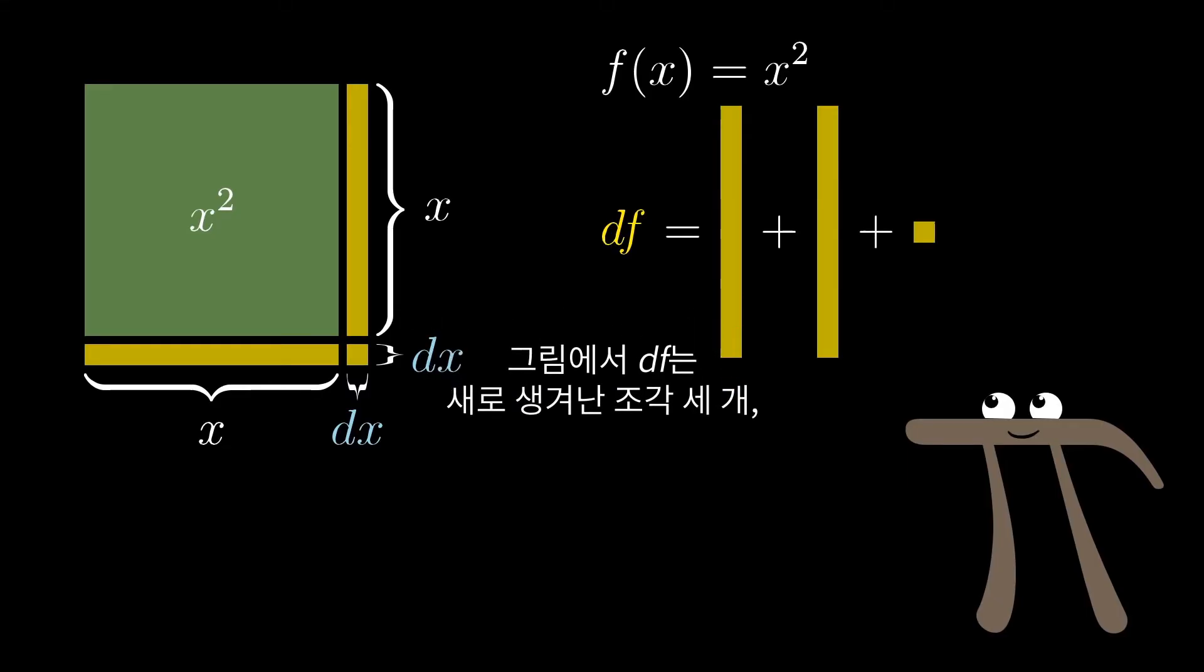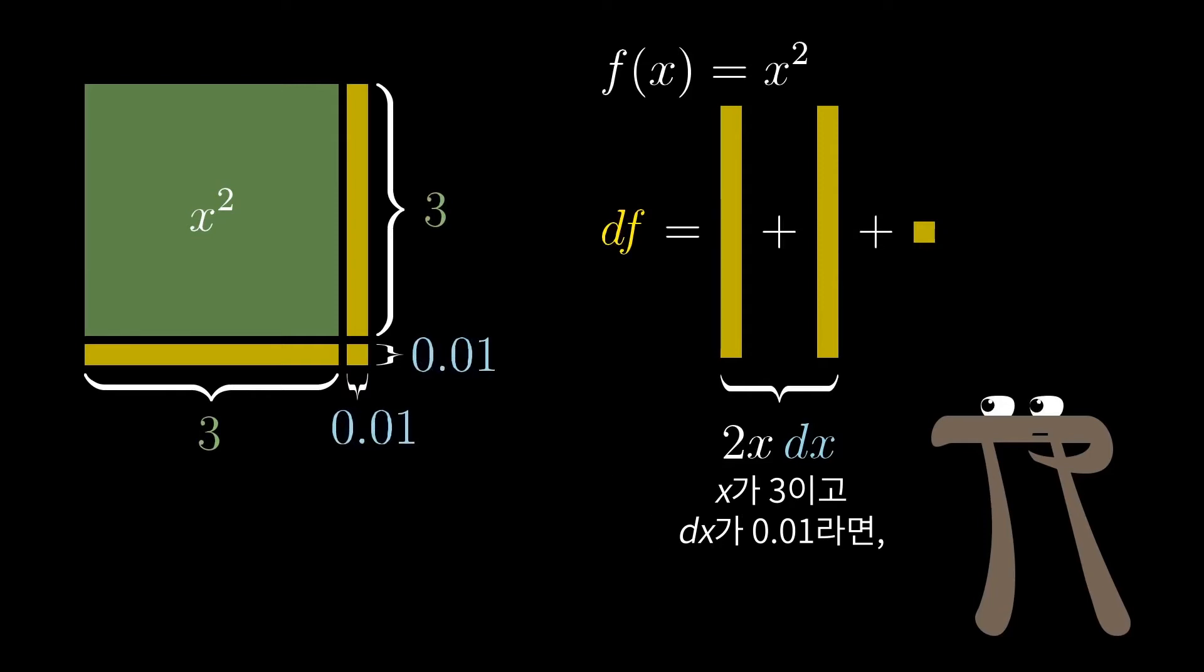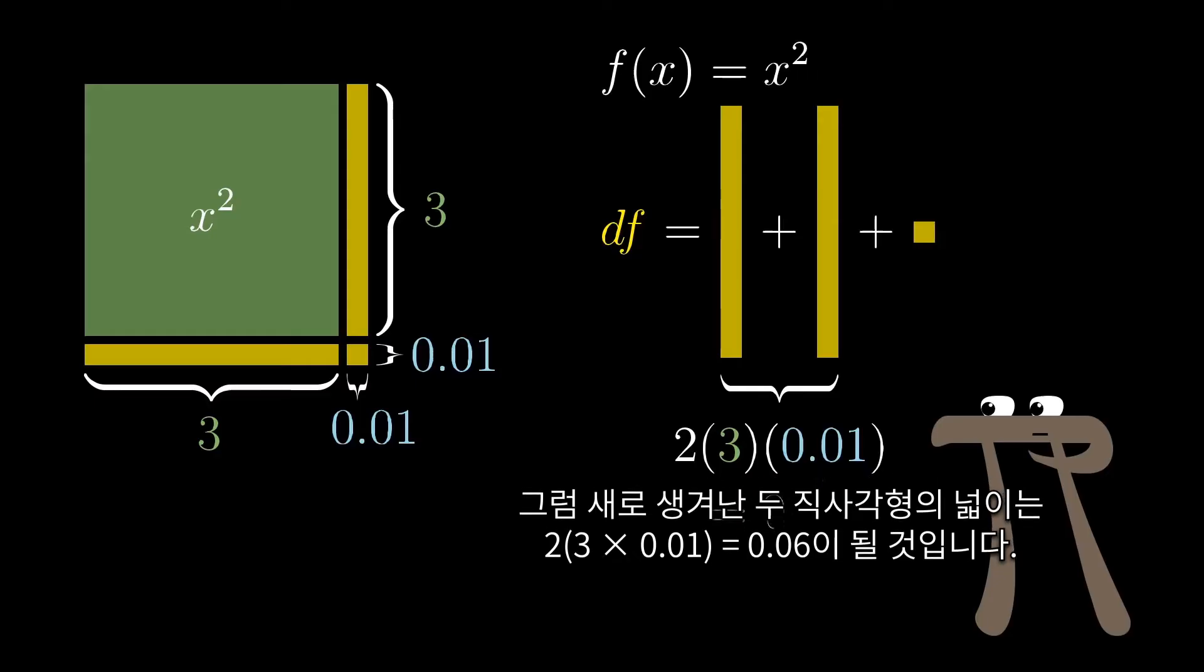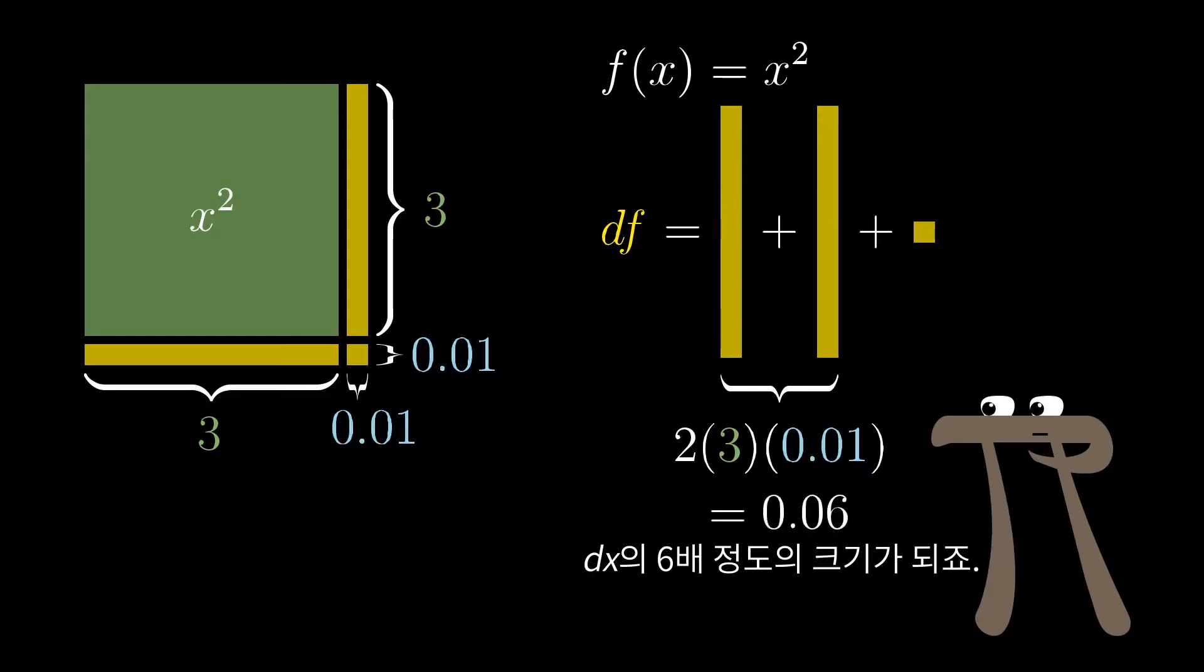That slight change in area is what df means in this context. It's the tiny increase to the value of f equals x squared, caused by increasing x by that tiny nudge dx. You can see that there's three new bits of area in this diagram, two thin rectangles and a minuscule square. The two thin rectangles each have side lengths of x and dx, so they account for 2 times x times dx units of new area. For example, let's say x was 3 and dx was 0.01, then that new area from these two thin rectangles would be 2 times 3 times 0.01, which is 0.06, about 6 times the size of dx.